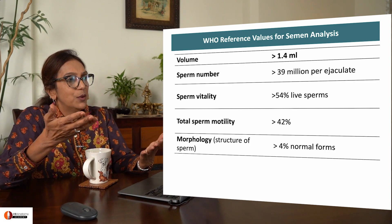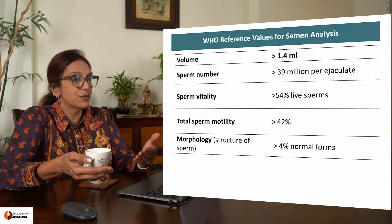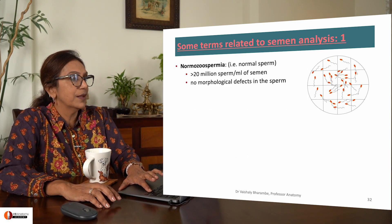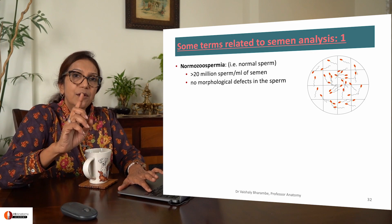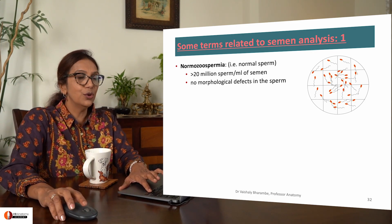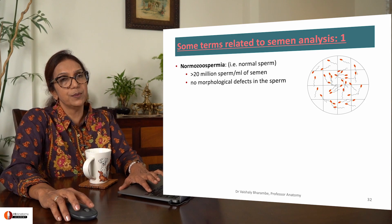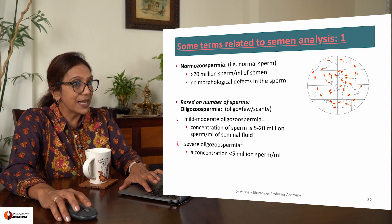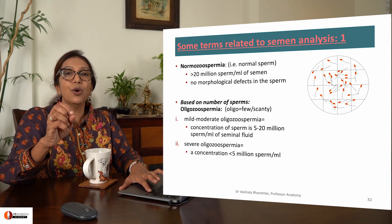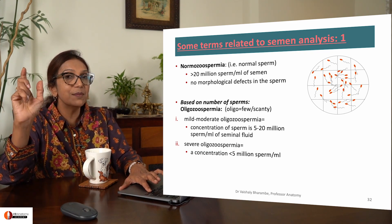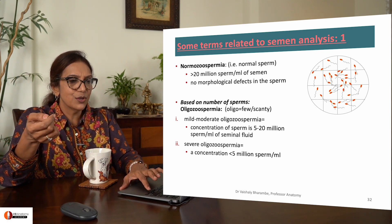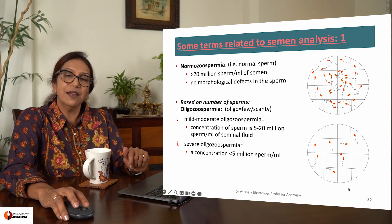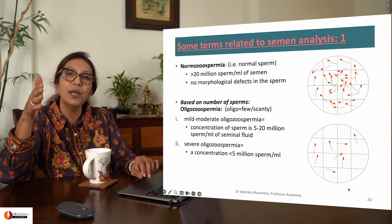WHO has come up with values for semen analysis. When there are greater than 20 million sperms per ml of semen, you call it normospermia. When there are less than that — even up to 5 million sperms per ml — you call it oligospermia. Oligo means scanty. You can see there are very few sperms, which is oligospermia.